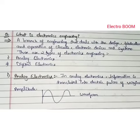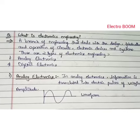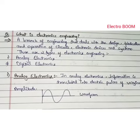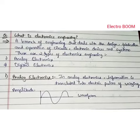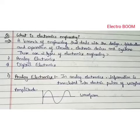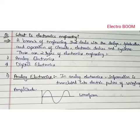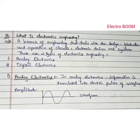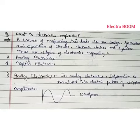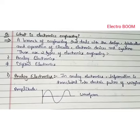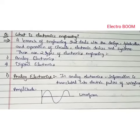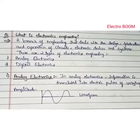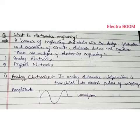It is a branch of engineering that deals with the design, fabrication and operation of circuits, electronic devices and systems. There are two types of Electronics Engineering: the first one is Analog Electronics and the second one is Digital Electronics.